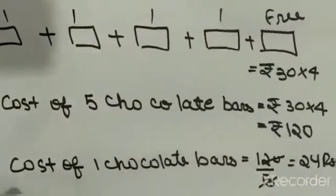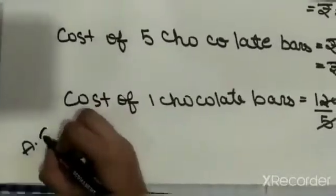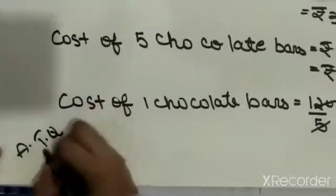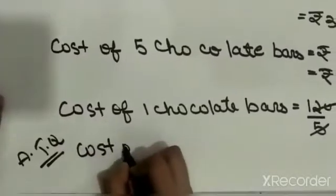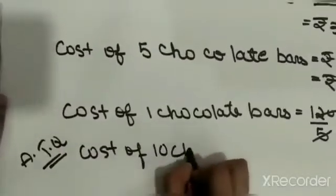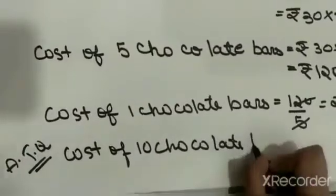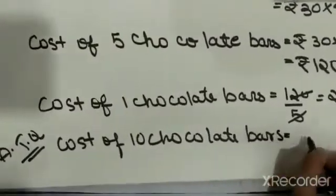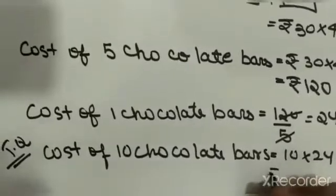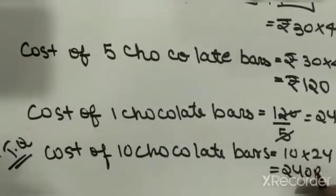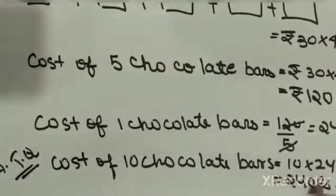Now according to the question, cost of 10 chocolate bars equals Rs. 24 into 10, which is equal to Rs. 240. So the cost of 10 chocolate bars equals Rs. 240.